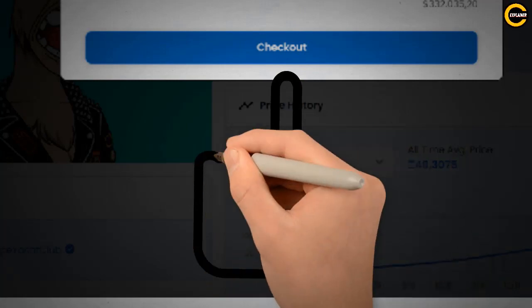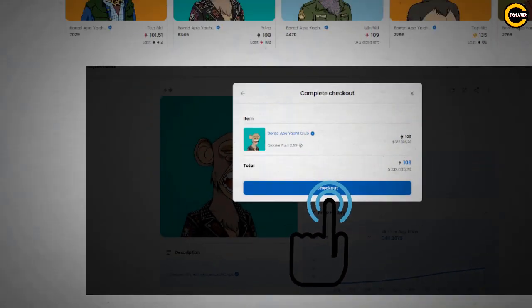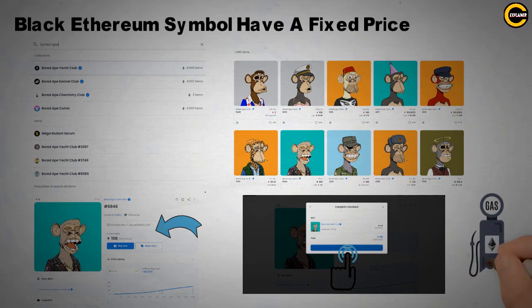Once you click on Buy Now, you will proceed to the checkout window. Each transaction requires gas fees, although this should not be a problem if you are buying a Bored Ape.